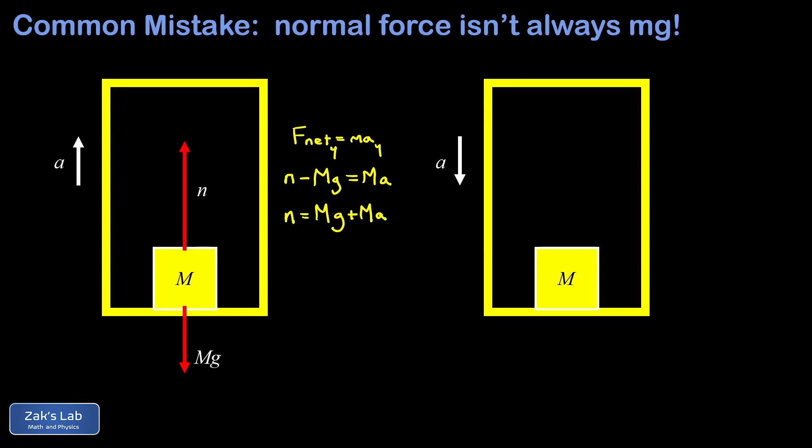Finally, our last example is kind of the reverse of the first, where the elevator is accelerating downward. This can mean the elevator is either moving upward and slowing down or moving downward and speeding up. But all that matters for the physics of the problem is that the acceleration points downward.